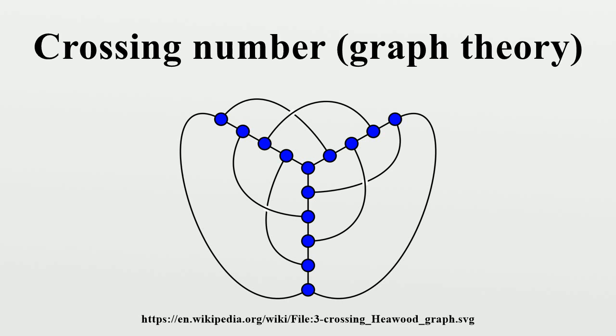In general, determining the crossing number of a graph is hard. Garey and Johnson showed in 1983 that it is an NP-hard problem. In fact, the problem remains NP-hard even when restricted to cubic graphs and to near-planar graphs.